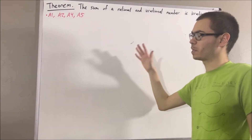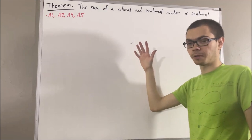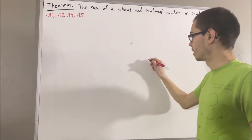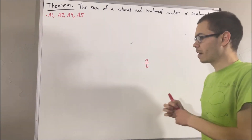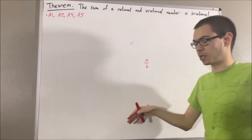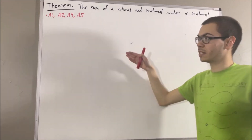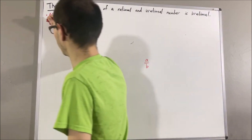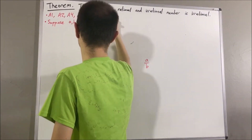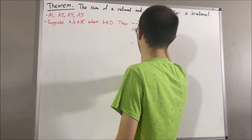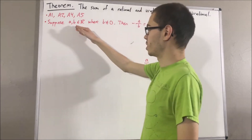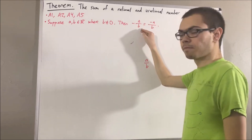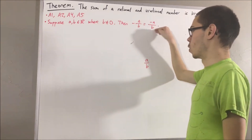Axiom 7 tells us that every non-zero real number has a reciprocal, and we use the concept of a reciprocal to define the operation of division. I have more details of that in the description below, but what's going to be important is the result we have proven involving the division operation: suppose a and b are real numbers where b is non-zero, then the negative of a over b is equal to negative a over b.